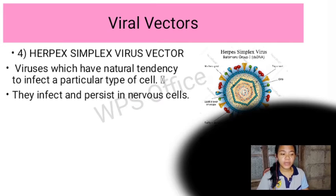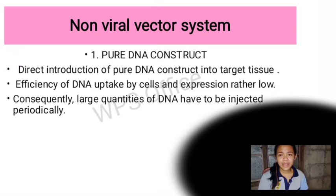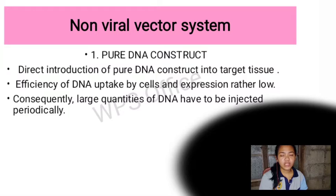The fourth viral vector is the herpes simplex virus vector. These are viruses which have a natural tendency to infect a particular type of cell — they infect and persist in nervous cells. For non-viral vectors, the first example is pure DNA construct — the direct introduction of pure DNA construct into target tissue.